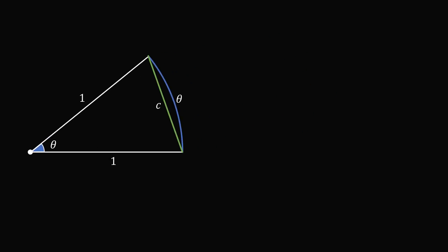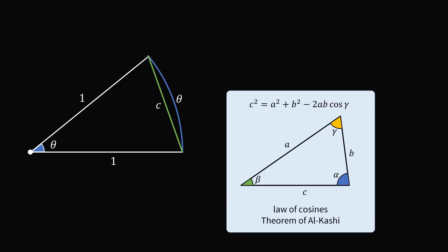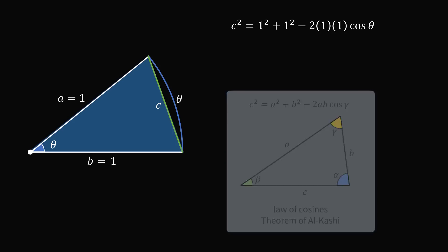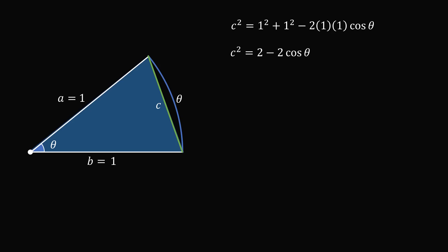So now let's calculate the length of c. We can do this by using the law of cosines, also known as the theorem of Al-Kashi. The formula is c squared is equal to a squared plus b squared minus 2ab cosine of gamma. We have a triangle here. We know that one side length is c. Let's let the other side length a equal 1, and the final side length b equal 1. The angle is equal to theta. So directly substituting into the formula, we have c squared is equal to 1 squared plus 1 squared minus 2 multiplied by 1 multiplied by 1 multiplied by the cosine of theta. We can simplify this equation to get that c squared is equal to 2 minus 2 cosine theta.